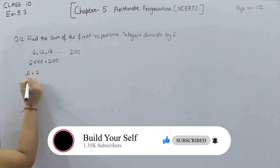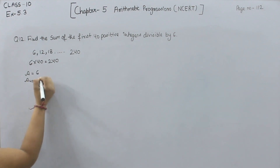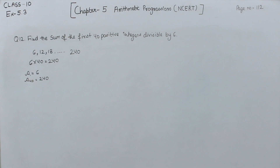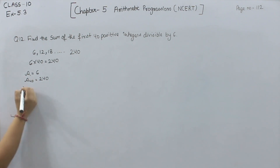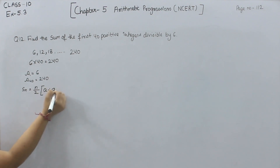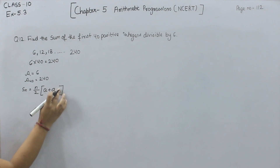So A1, that is A, is equal to 6, and A40 is equal to 240. Now we have to find the sum, so we write the formula: S_N = (N/2)(A + A_N), where A_N is the Nth term.